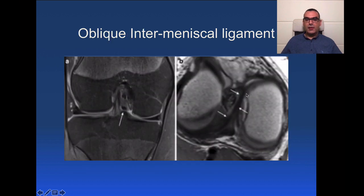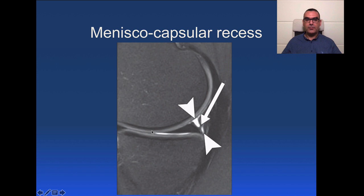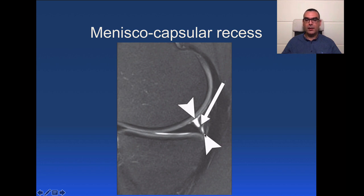The oblique intermeniscal ligament is also a common variant that can be mistaken for a meniscal tear or a loose intraarticular fragment. The meniscal capsular recess is the fluid-filled space between the meniscus and the capsular attachment, confined by the meniscal capsular ligaments. Once you see the meniscal capsular ligament passing through with a clear-cut, well-defined linear base of the meniscus, you should not mistake this for a meniscal capsular separation or a peripheral meniscal tear.